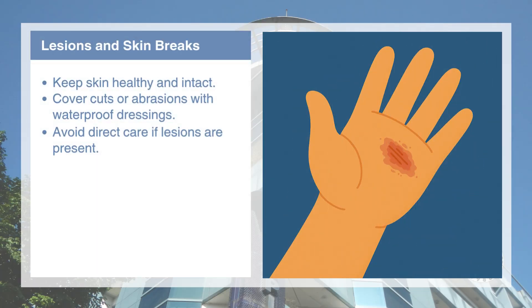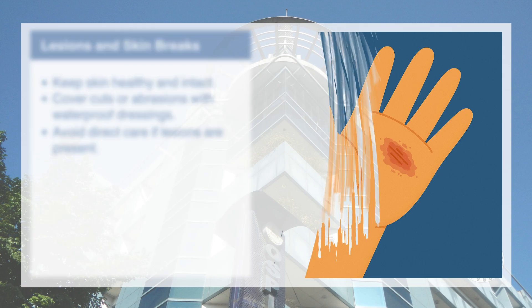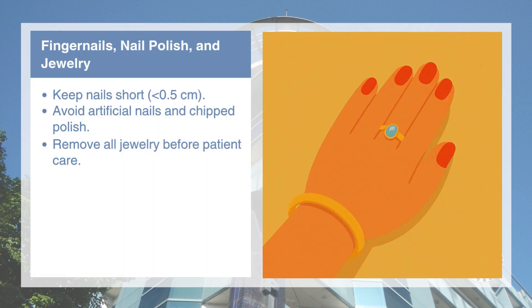Damaged skin is a risk for infections. Ensure your hands and forearms are free from open lesions before providing care, as small breaks or lesions can be entry points for harmful bacteria and viruses. Protecting your skin also protects your patients. Long nails and jewelry harbor microorganisms and interfere with hand hygiene. Keep nails short and avoid jewelry in clinical areas, especially rings, as they increase the surface area for germs to hide. Even clean-looking hands can carry pathogens under rings and artificial nails.